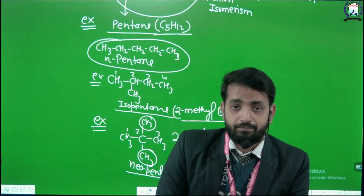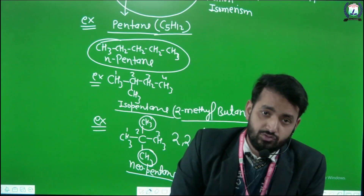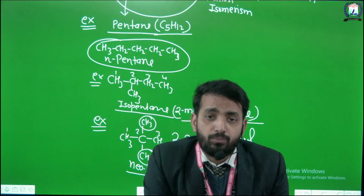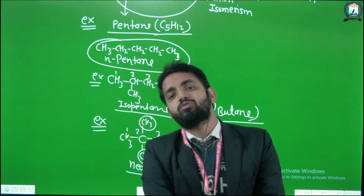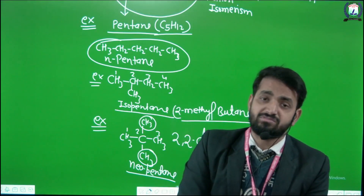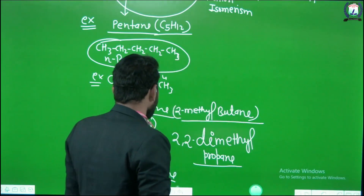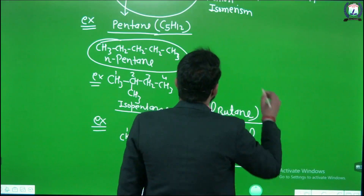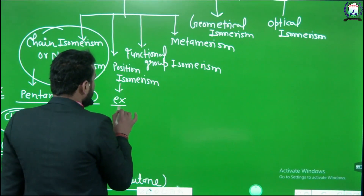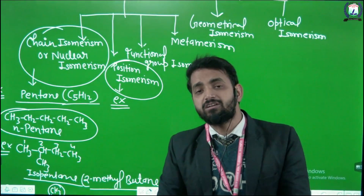The next type is position isomerism. Compounds having the same molecular formula but the position of the functional group or substituent is different are called position isomers. This phenomenon is called position isomerism.